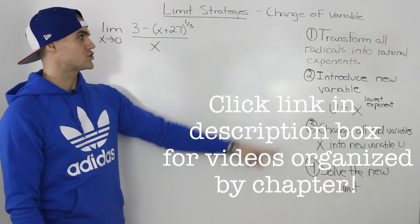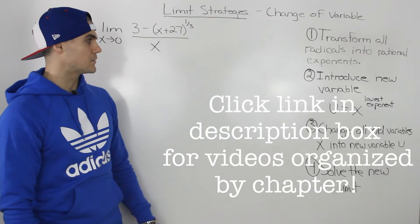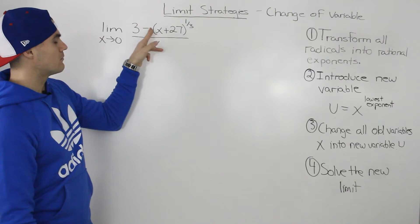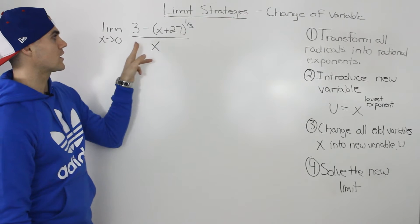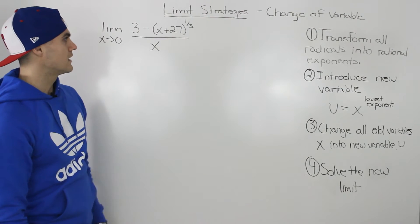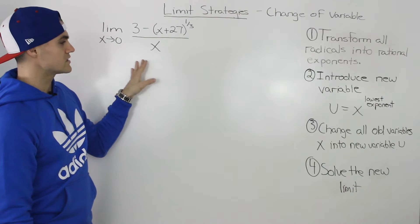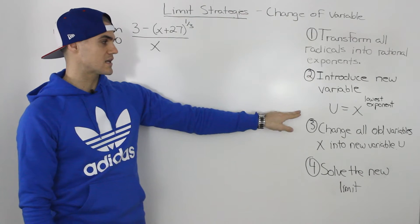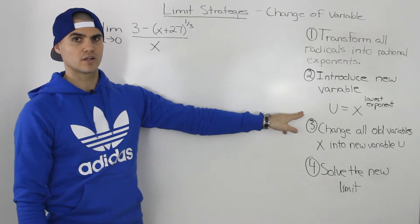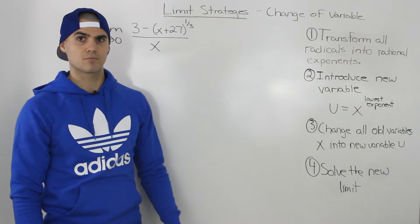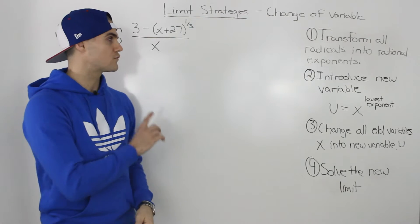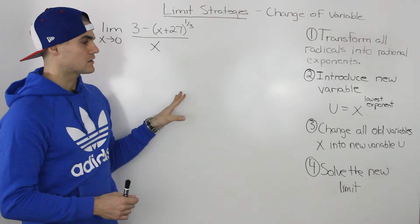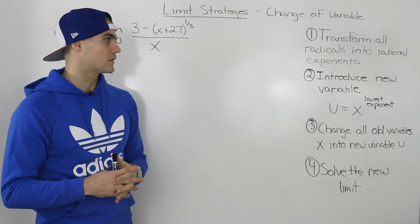Moving on to the next example for the change your variable strategy for solving limits. We have the limit as x approaches 0 of (3 minus x plus 27) to the power of 1/3, all over x. To solve this question, I'm going to follow the same series of steps covered in the overview video and previous examples. This particular example is going to be a little unique in certain parts.